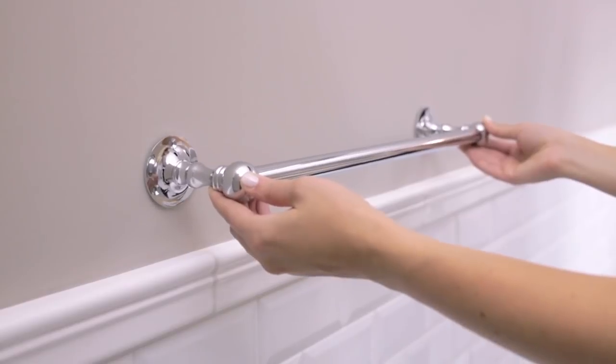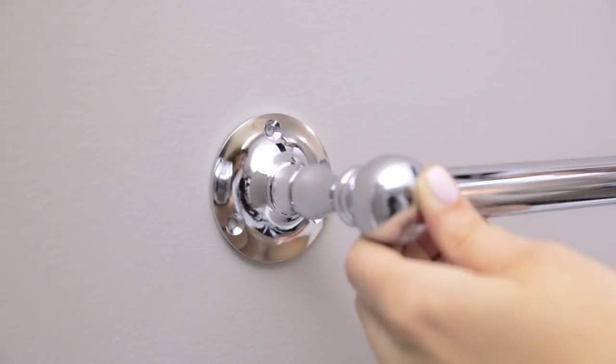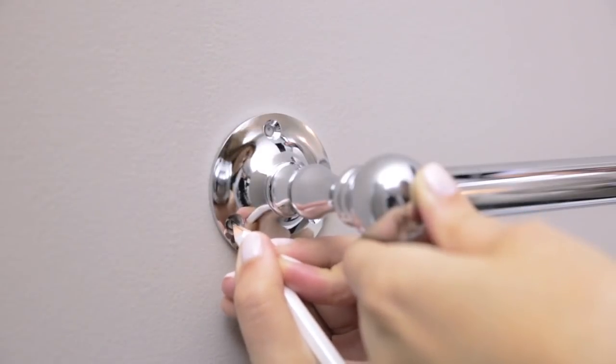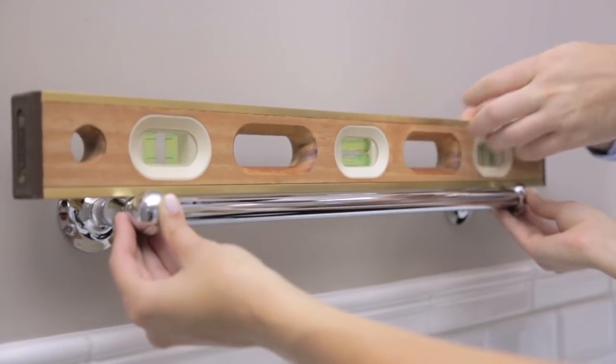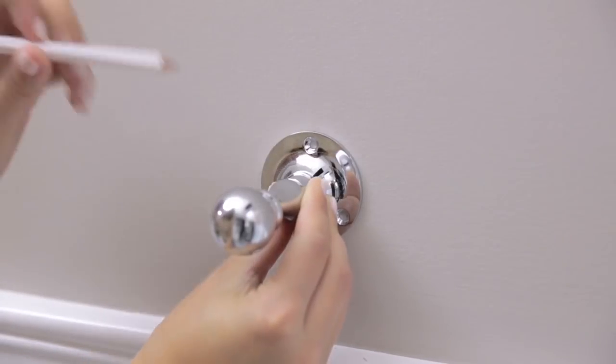Assemble the towel bar and mounting brackets to determine the desired location. Mark the screw holes on one side with a pencil. Use the level or tape measure to make sure the bar is level and then mark the screw holes on the other side.